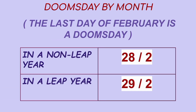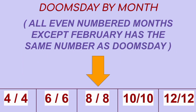Doomsday by month: The last day of February is a doomsday — in a non-leap year, 28th of February; in a leap year, 29th of February. All even-numbered months except February have the same number as their doomsday: 4th of April, 6th of June, 8th of August, 10th of October, 12th of December.